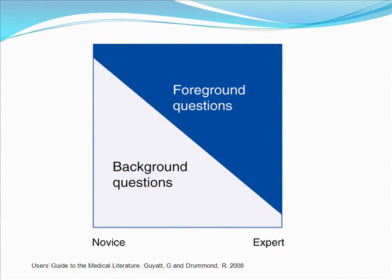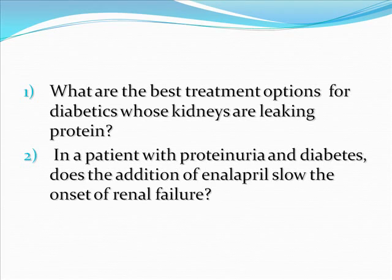There are two broad categories of questions: background and foreground questions. Typically, background questions are less specific and usually try to fill gaps in general knowledge of human physiology and disease processes. Clinicians who are responsible for patients with a particular problem will be more likely to ask a foreground question. In this example, we see two questions on a similar topic — the first is a background question and the second is a foreground question.